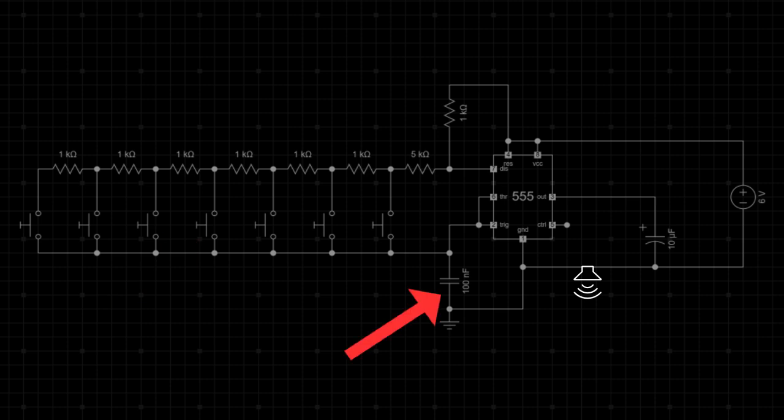The 0.1 microfarad capacitor connected between pin 2 and ground helps to stabilize the circuit and avoid false triggering.